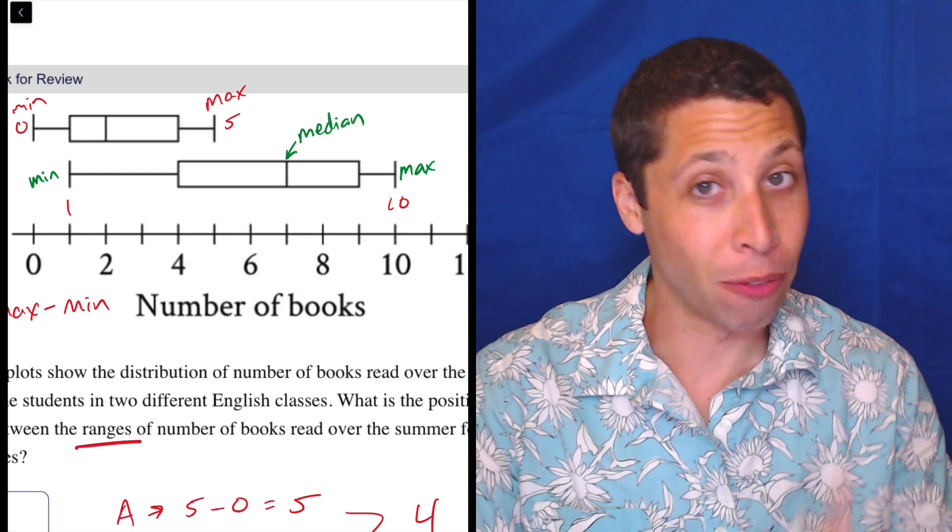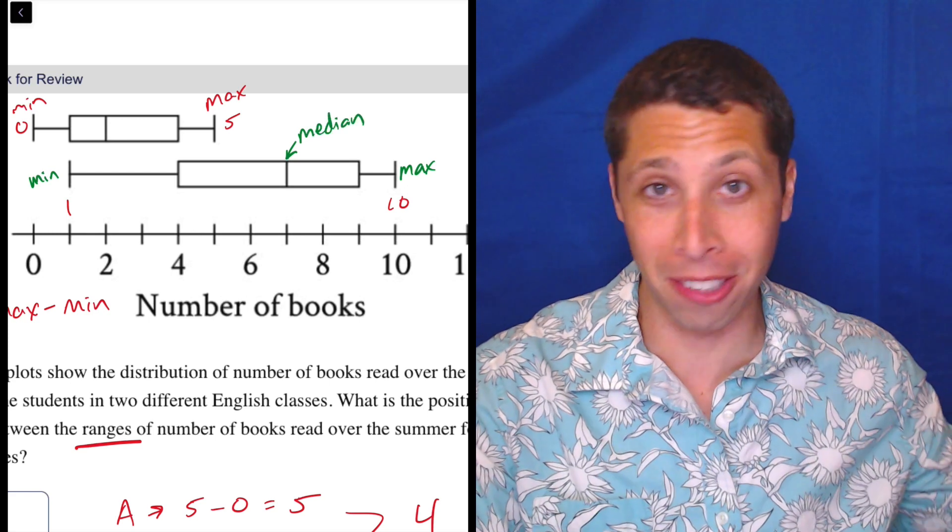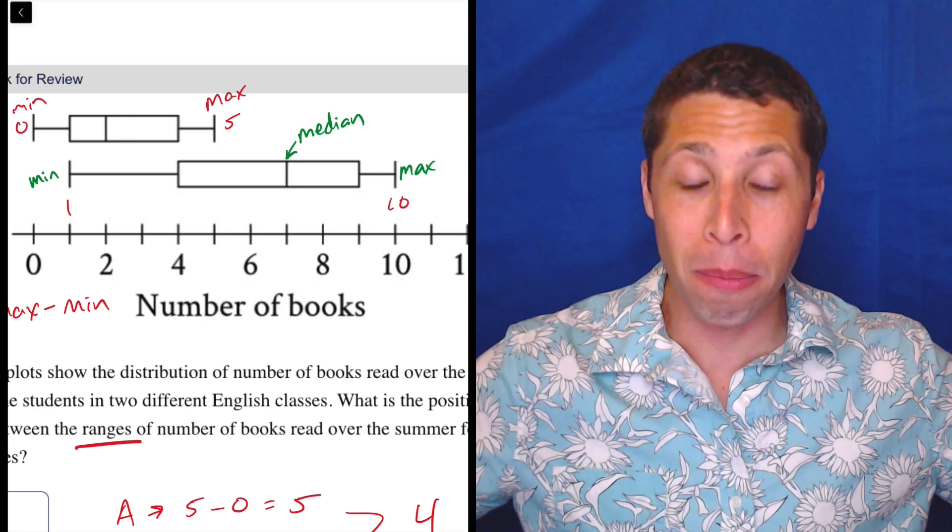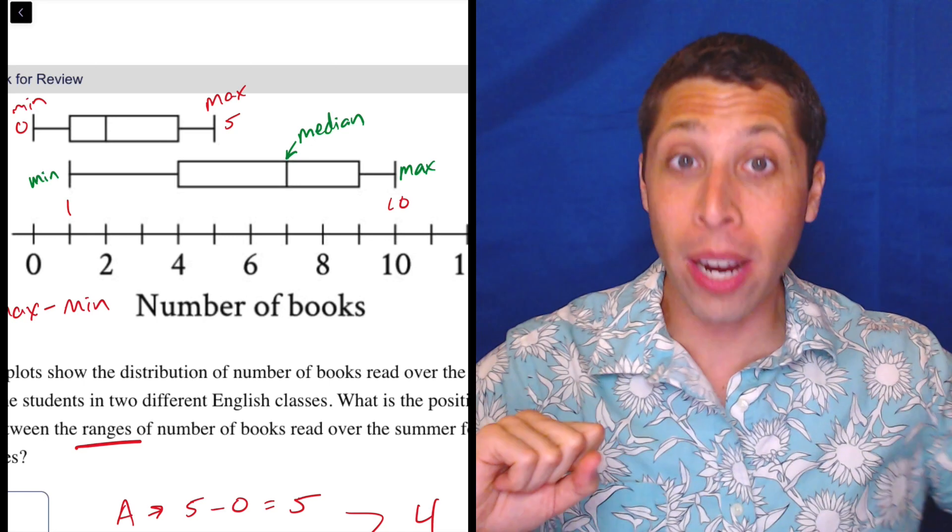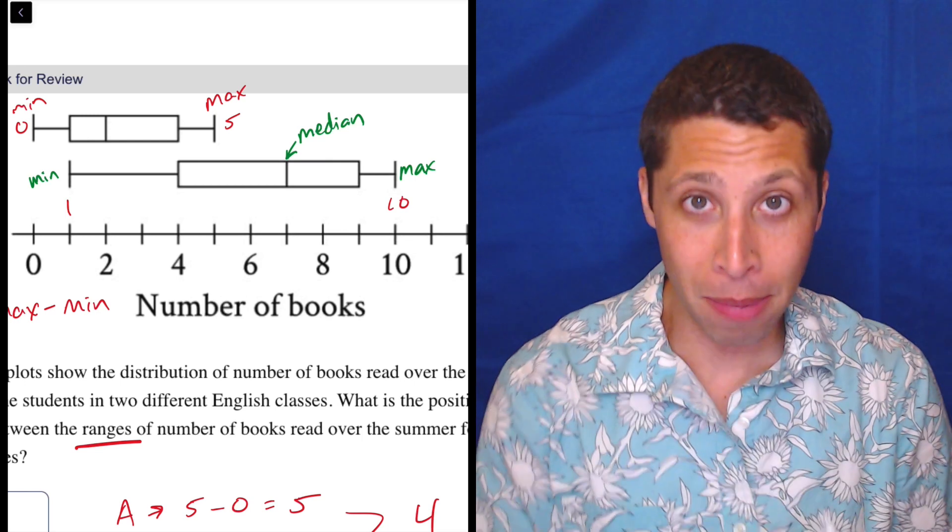The only other thing you really need to know is that the middle part, the middle of the rectangle, is the median. The median value. The median value, remember, is if we arranged all the numbers in order from least to greatest, the middle number is the median.